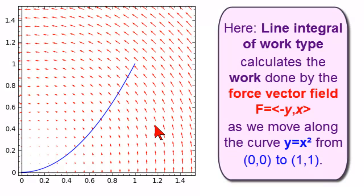So the red is the scalar force field. The blue is the curve, y equals x squared, from (0,0) to (1,1). And with our line integral, we're calculating how much work this force field does from (0,0) to (1,1) along this curve.